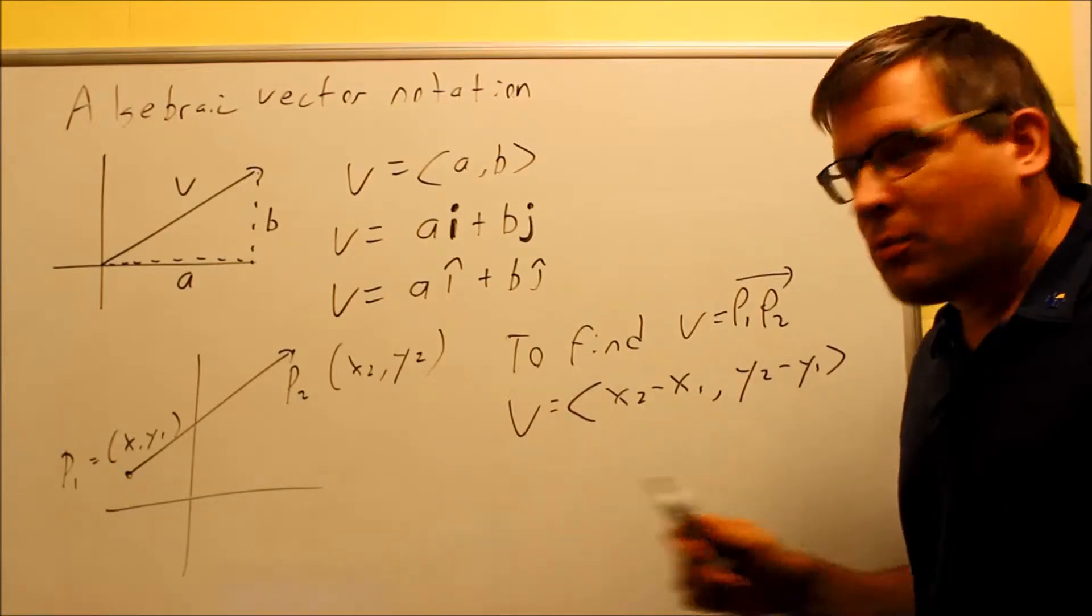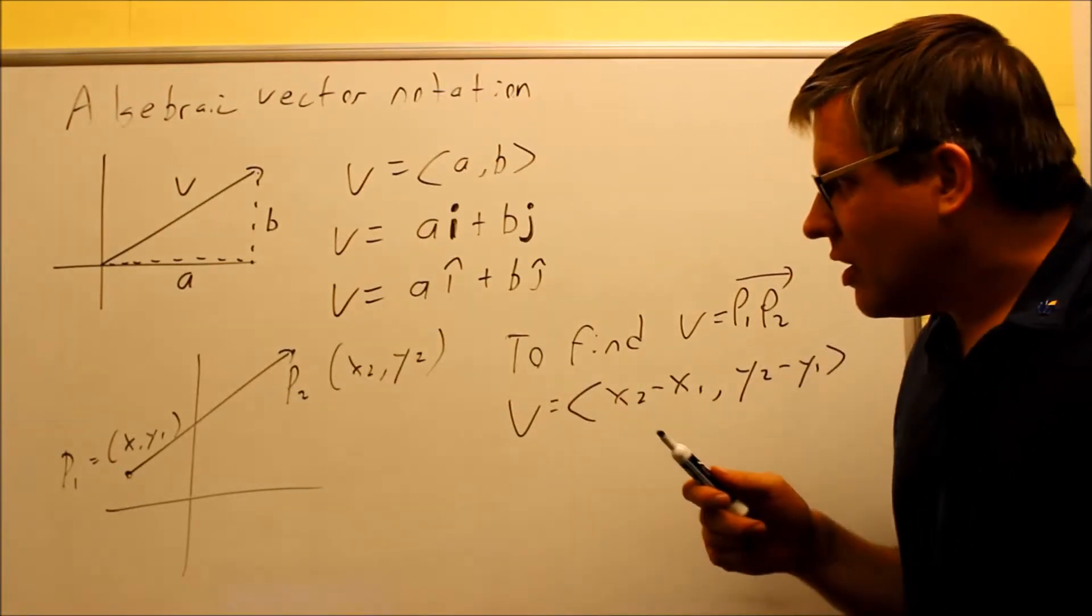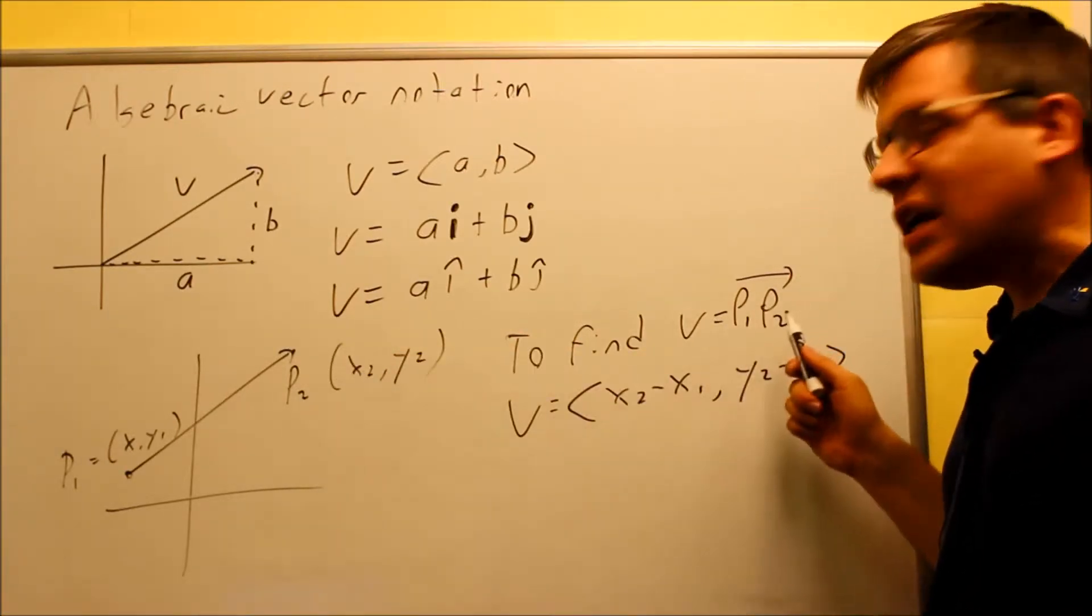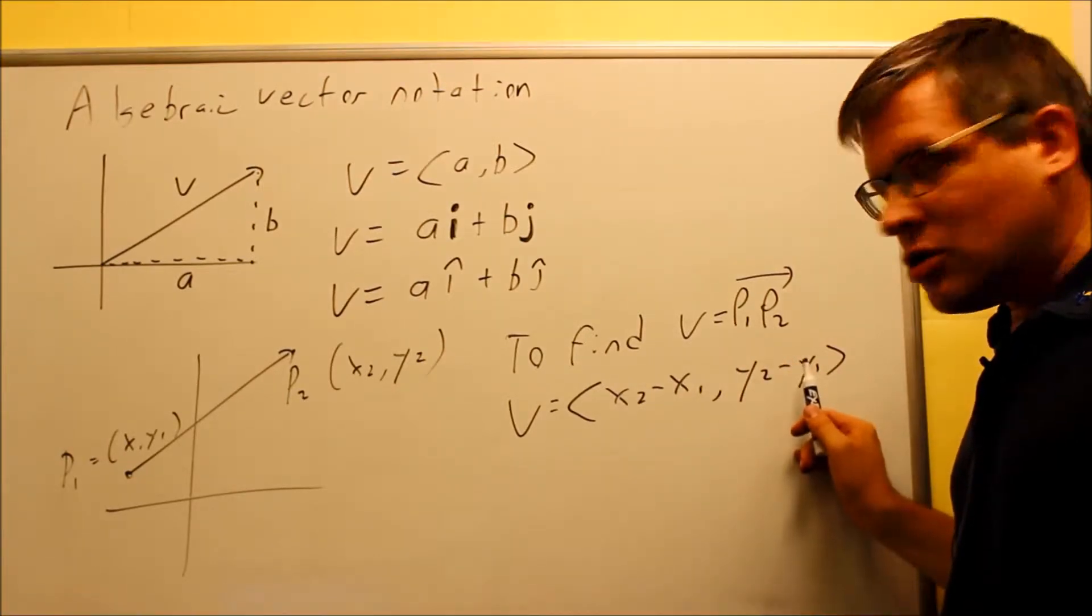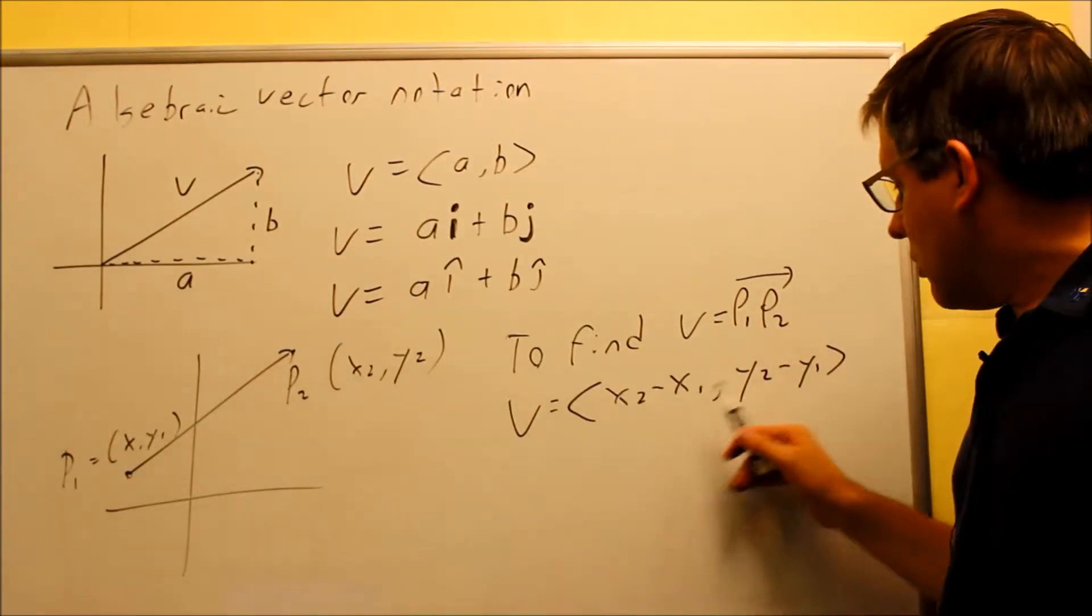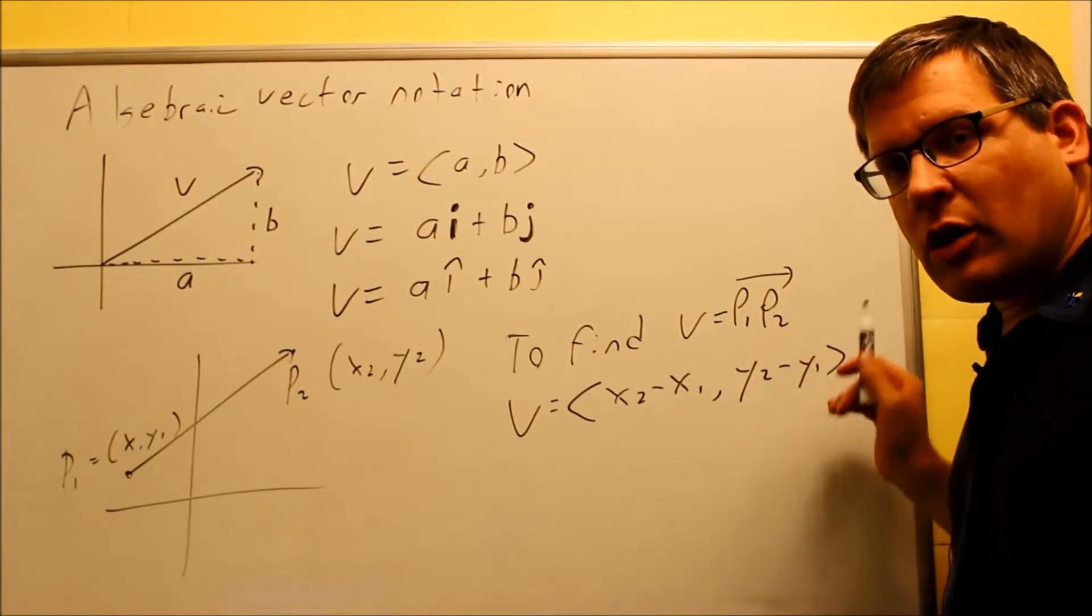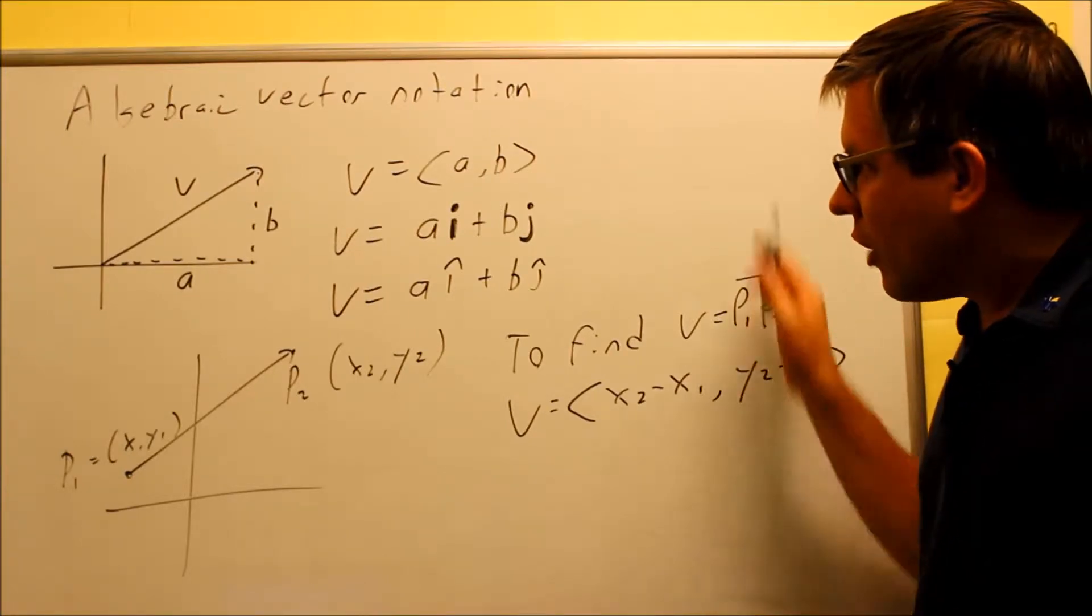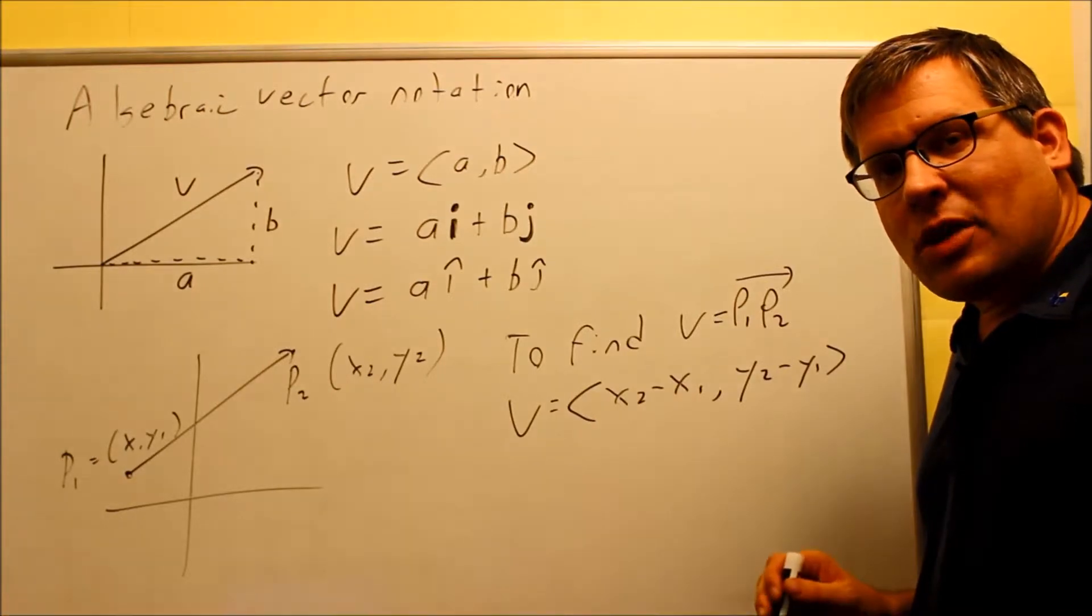Your P2 is always your ending point, where the arrowhead actually is. So if I switch these and did P2 and P1, that means that these would switch. You'd have X1 minus X2, and you'd have Y1 minus Y2. That would just switch the order around. So now that we've looked at this concept, let's take a look at a couple examples.